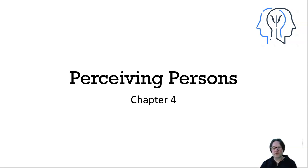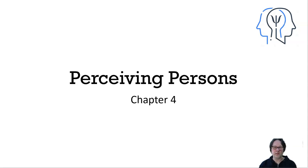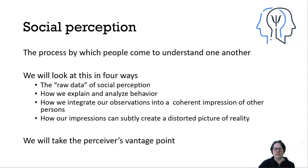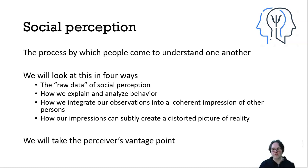Hello all, welcome to the chapter four lecture, which deals with how we perceive other people. Chapter three dealt more with how we come to know ourselves and how we develop a self identity. This chapter deals more with how we come to know other people, how we come to think about them. Perceiving others involves something known as social perception, and this is the process by which people come to understand one another.